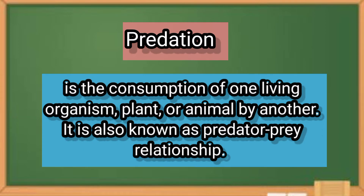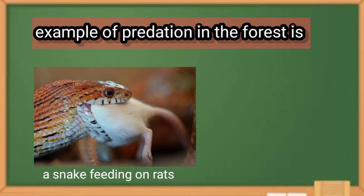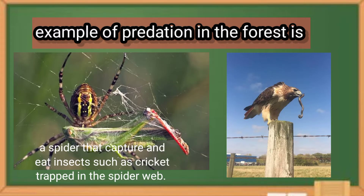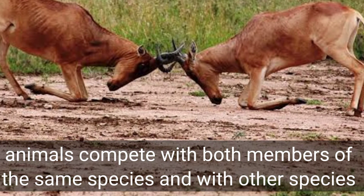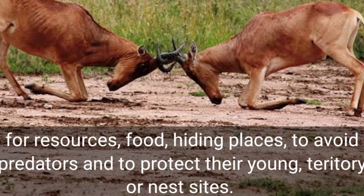Predation is the consumption of one living organism, plant or animal, by another. It is also known as the predator-prey relationship. An example of predation is a snake feeding on rats, a hawk feeding on a snake, and a spider capturing and eating insects such as a cricket trapped in a spiderweb. Next is competition. Populations of plants and animals can grow when their needs are met. But when populations in an ecosystem have the same needs and utilize the same resources, the resources become scarce and competition exists. Animals compete with both members of the same species and with other species for resources such as food, hiding places to avoid predators, protection of their young, territory, or nest sites.